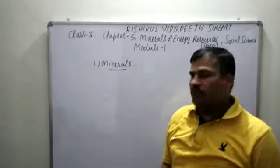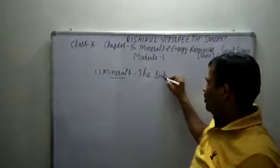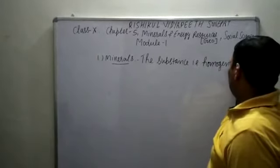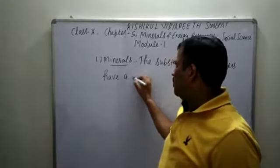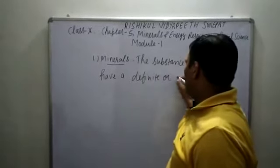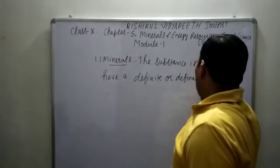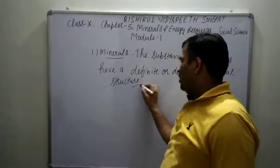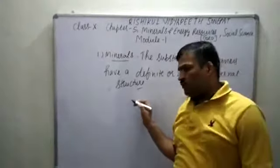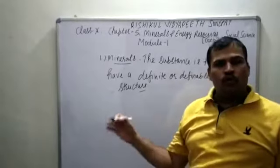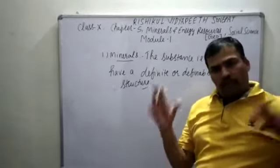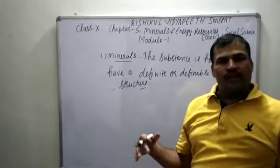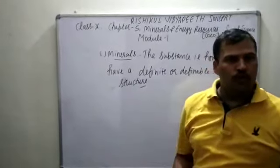Now we will look at the definition of minerals. These are substances that are homogeneous, having a definite or definable internal structure. They are found in their raw form — iron ore, gold, silver — embedded and covered in rocks. That may be in solid form, liquid form, or even gaseous form. All are part of minerals.